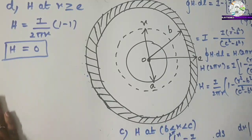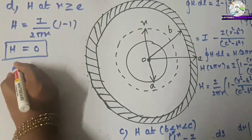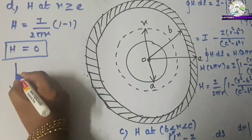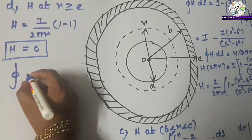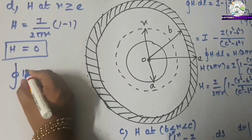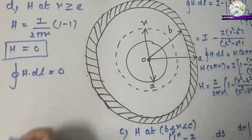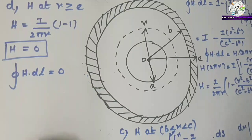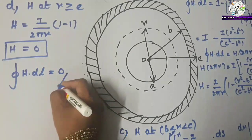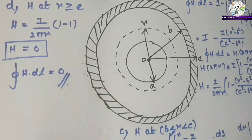So the expression is: the closed line integral of H dot dL equals 0. Thank you.